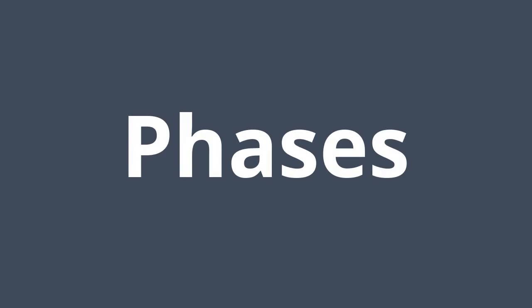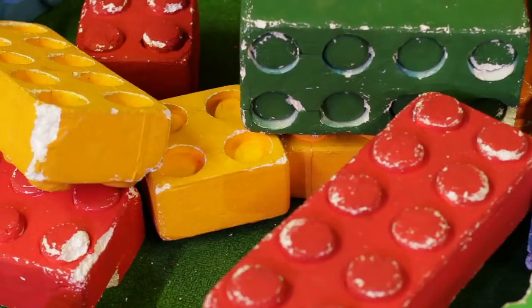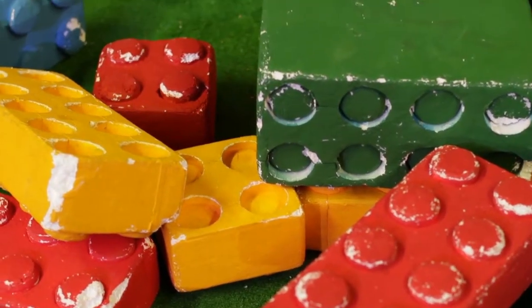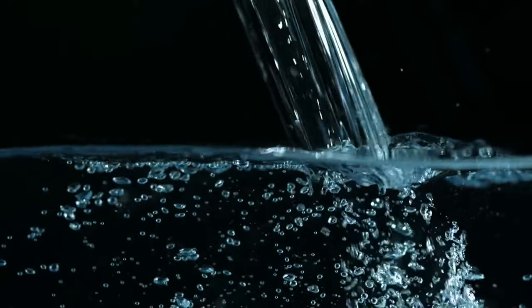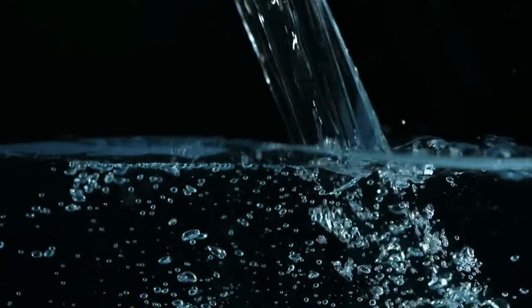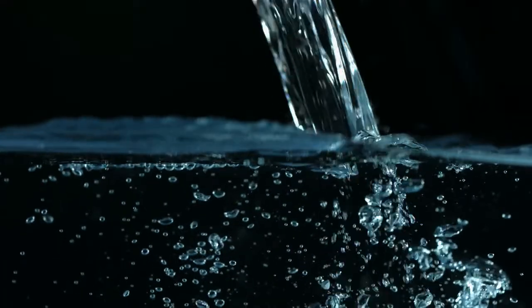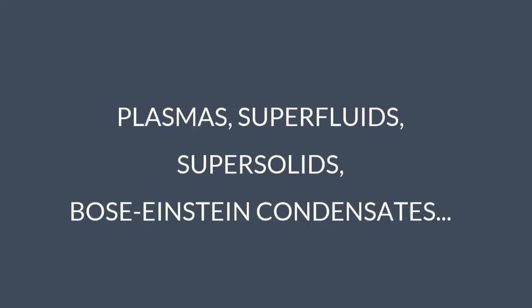Matter also exists in phases. The three most known ones are solids, liquids, and gases. There are also more exotic types of matter, like plasmas, superfluids, super solids, and Bose-Einstein condensates.